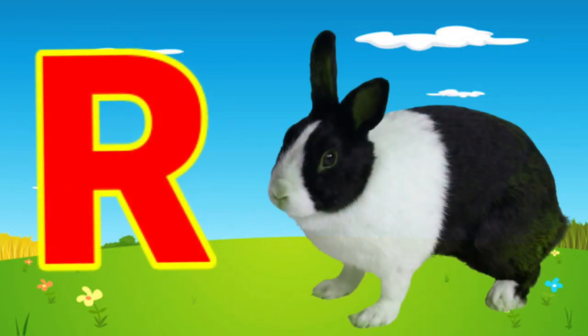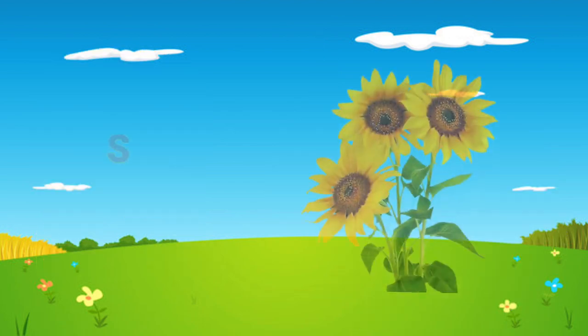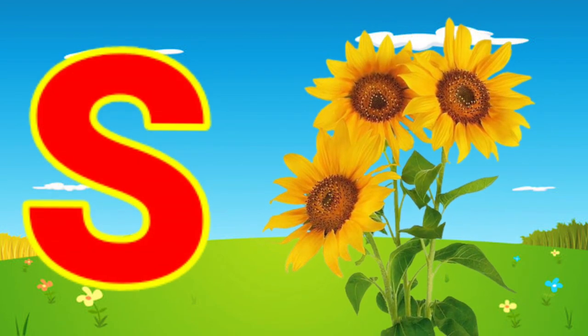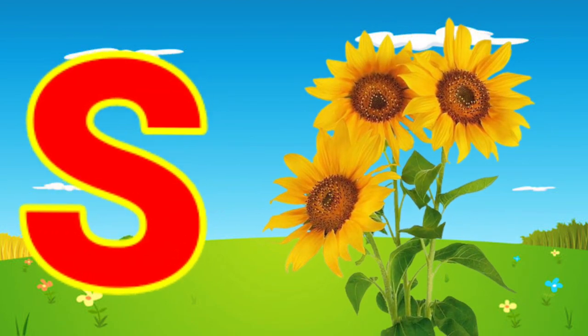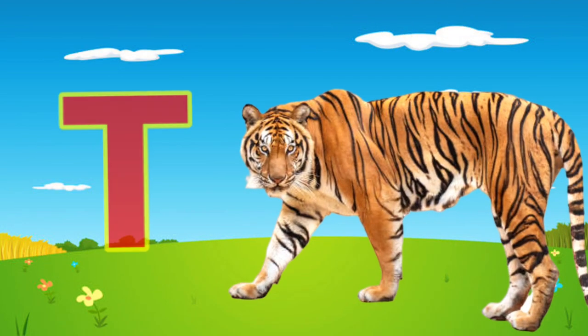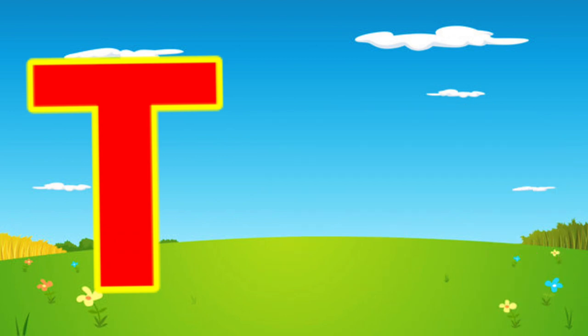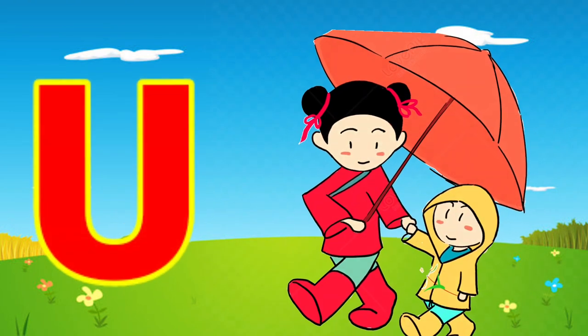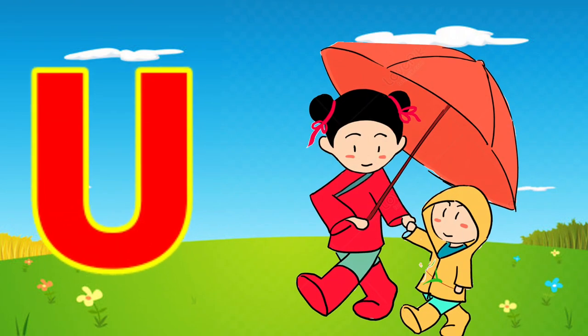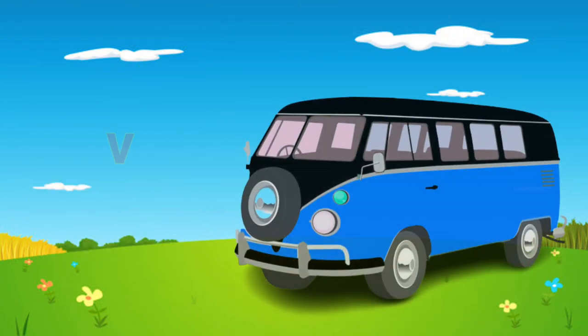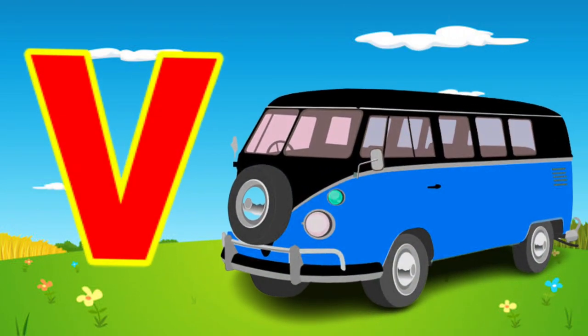R for rabbit, S for sunflower, E for tiger, U for umbrella, V for bell.